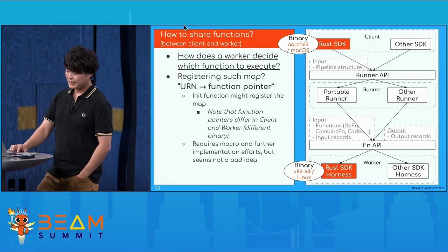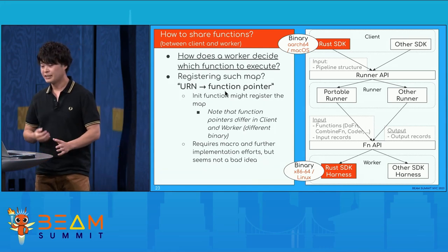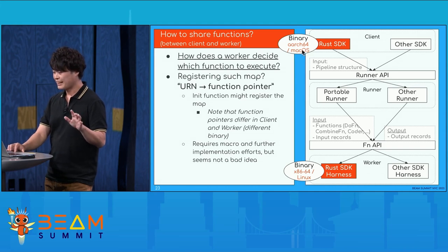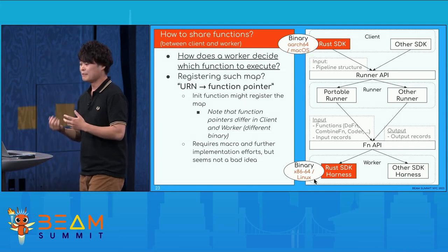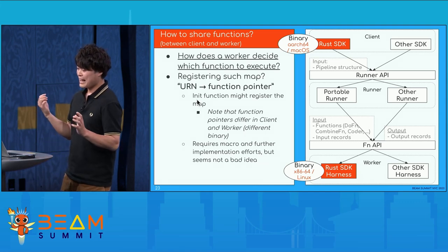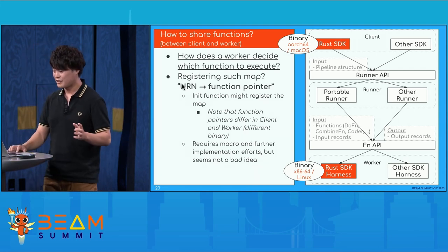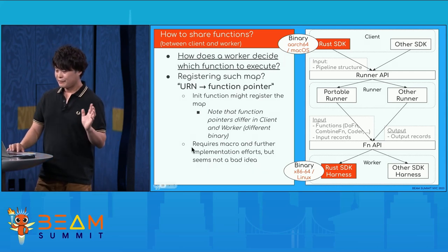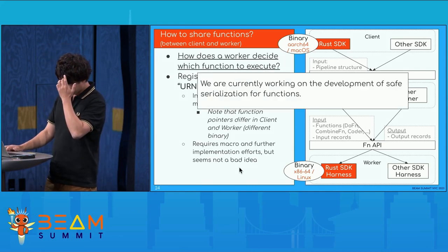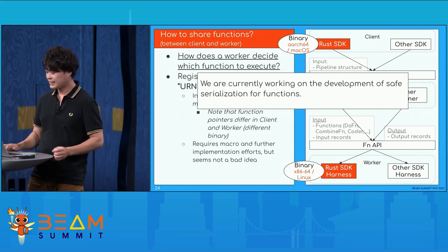So, how about registering a map where the key is a URN and the value is a function pointer — a user-defined function pointer? Note that the function pointer would differ in the client binary and the server binary because they might have different architectures. But for example, we could have an initialization function in Rust SDK with some trick, and this initialization function might register this kind of map or dictionary. It requires macros and further implementation effort, but it seems not a bad idea. However, I don't think it is the best solution, so we are currently working on the development of safe serialization for functions.